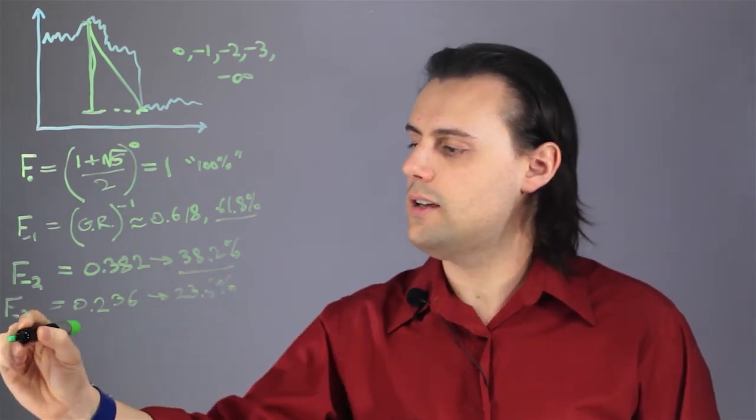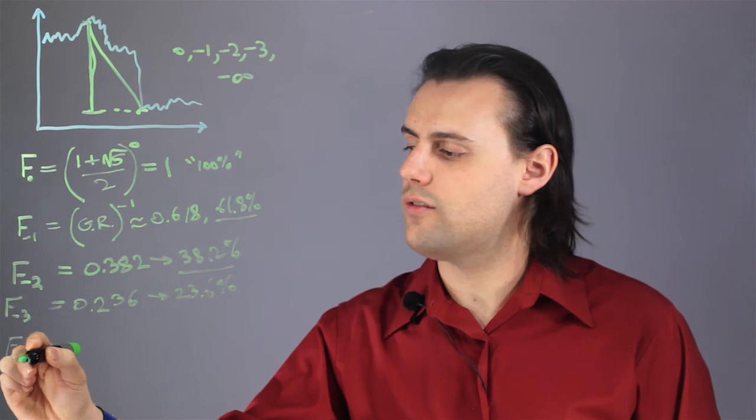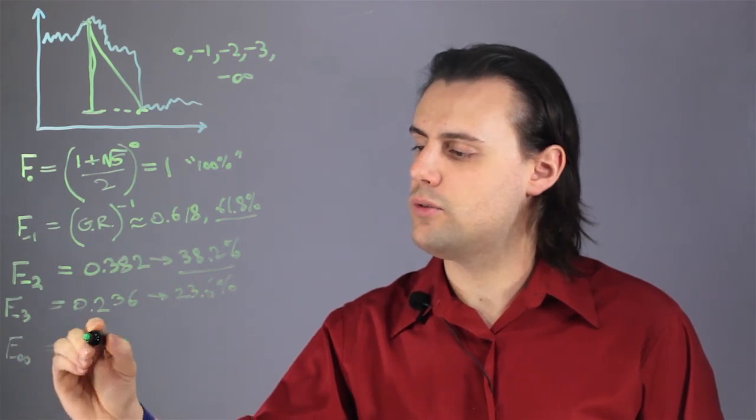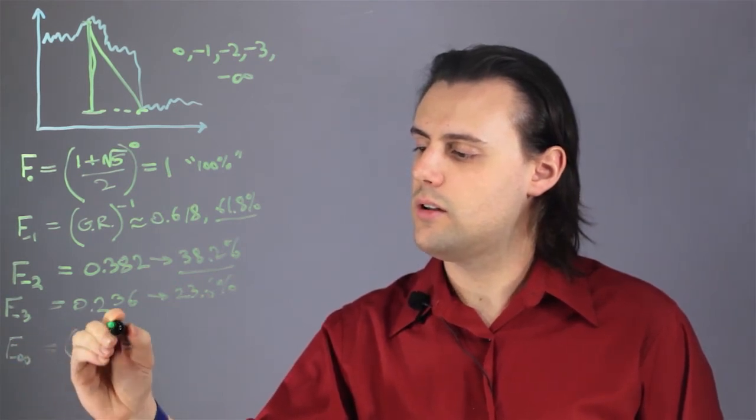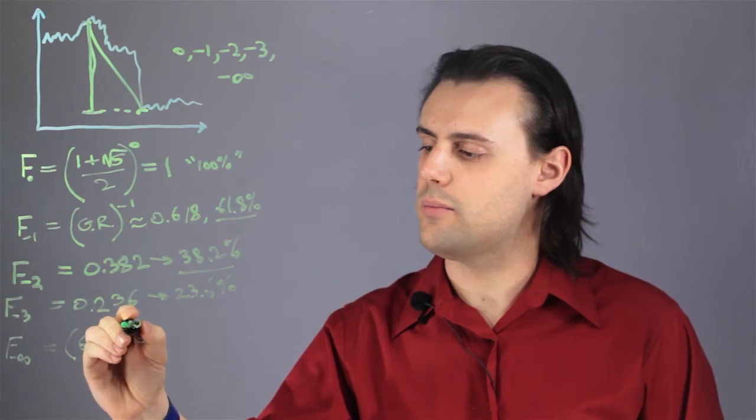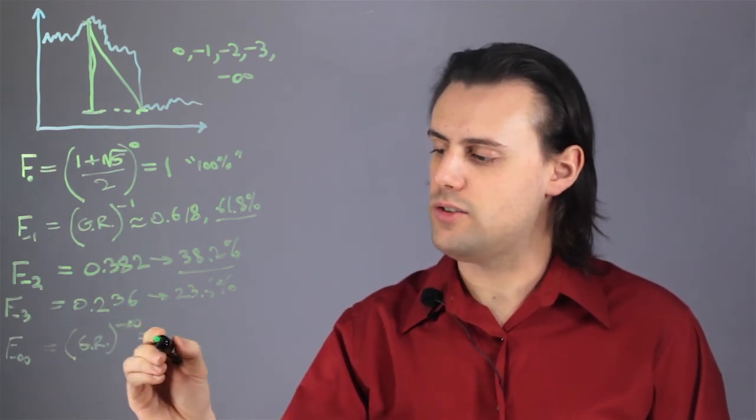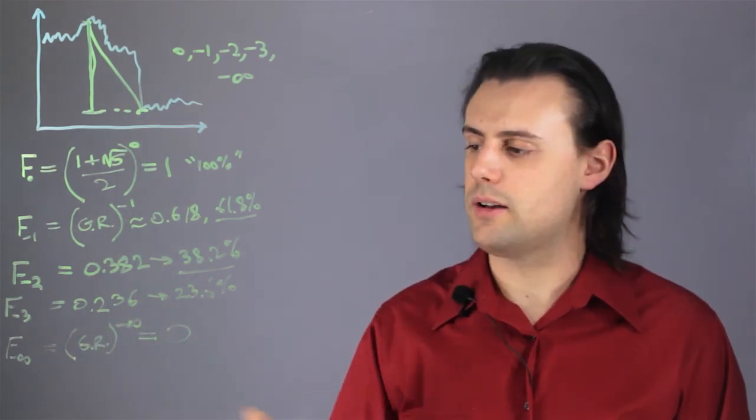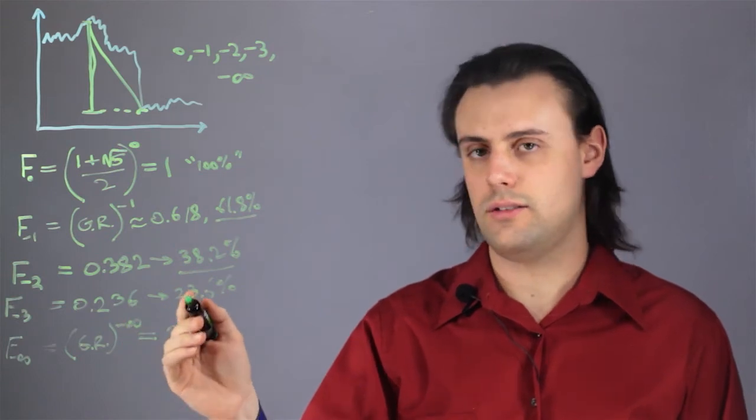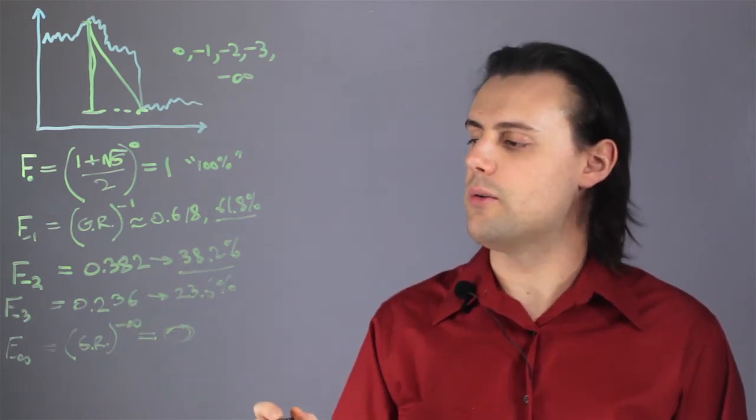And finally, F sub negative infinity will be equal to the golden ratio raised to the negative infinity power, which, of course, is just equal to 0. Because 1 over infinity, as you approach infinity, you ultimately get 0.